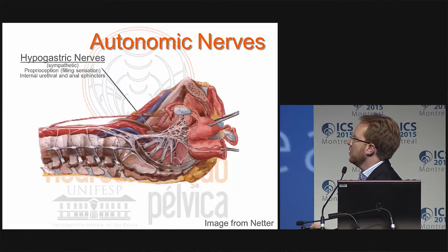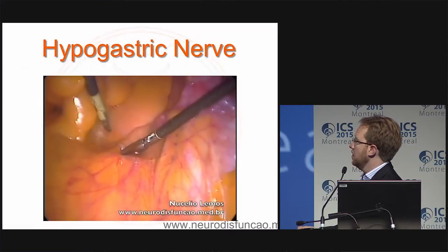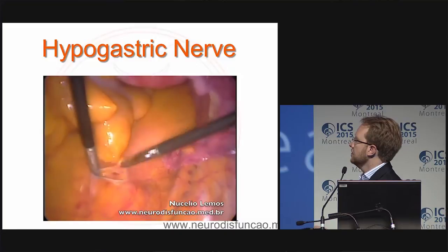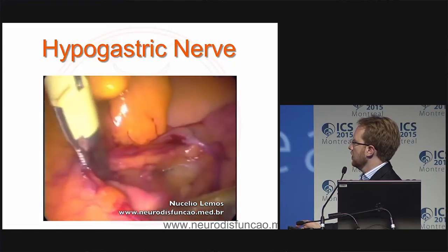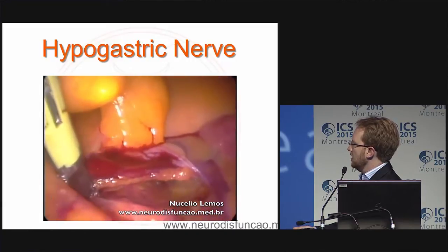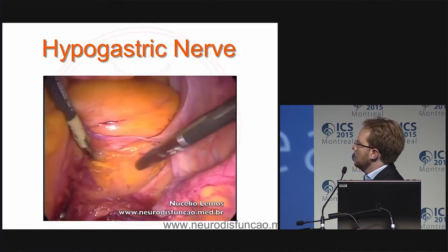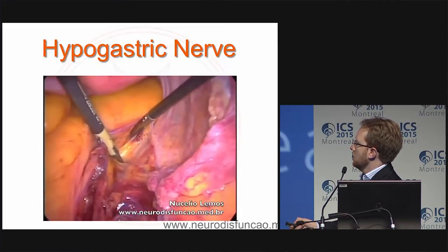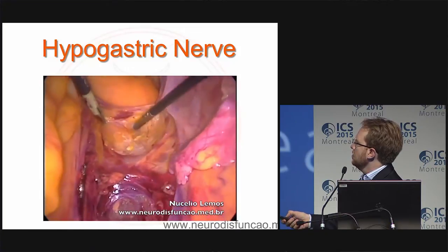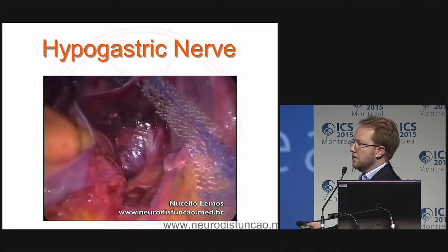The hypogastric nerves in women are often confused with the uterosacral ligaments. Here we're opening the pre-sacral space to perform a sacral colpopexy, and I'm opening the pre-sacral fascia. When you dissect the pre-sacral fascia, you can find the hypogastric nerve on the right side running over the fascia, and you can see it spreading into three branches to the bladder, uterus, rectum, and the nerve to the lower third of the ureter.